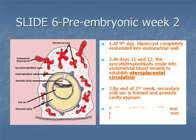Item 4: also at this time, the inner cell mass further differentiates into a bilaminar embryonic disc. The outer layer, the epiblast, is related to the amniotic cavity. The inner layer, the hypoblast, lies adjacent to the blastocyst cavity and has a localized thickening, the prochordal plate.